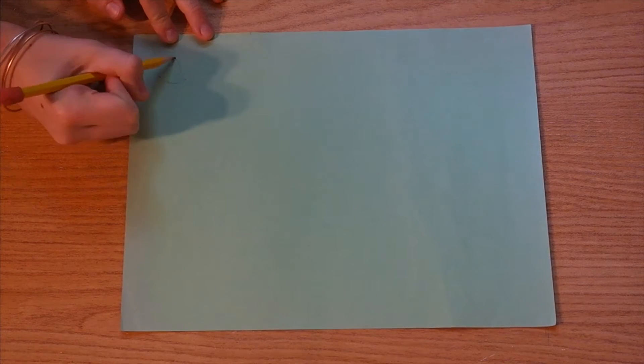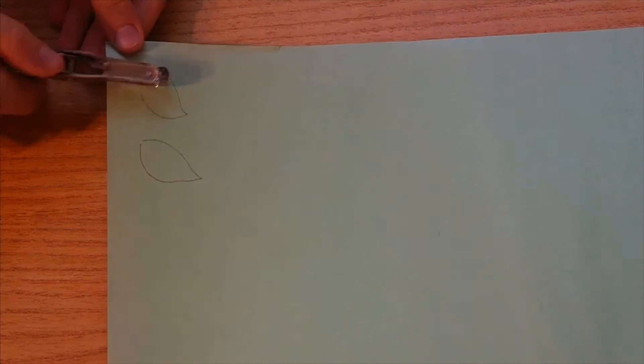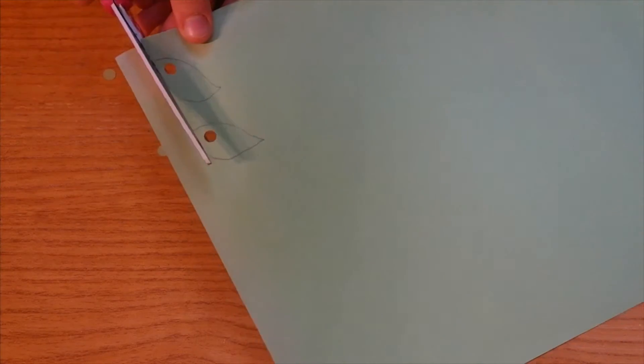Next take some green paper and draw two leaf shapes. You can use a stencil if you really want to, but I just hand drew them and I think that works totally fine. Punch a hole in both leaves and cut them out.